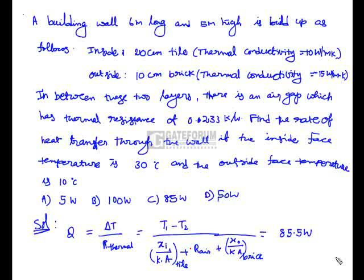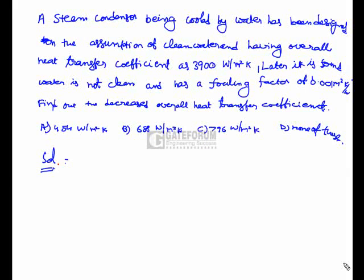The temperature difference between inside and outside is 30 minus 10 = 20°C, giving a result of 85.5W. The correct option is C, that is 85W.